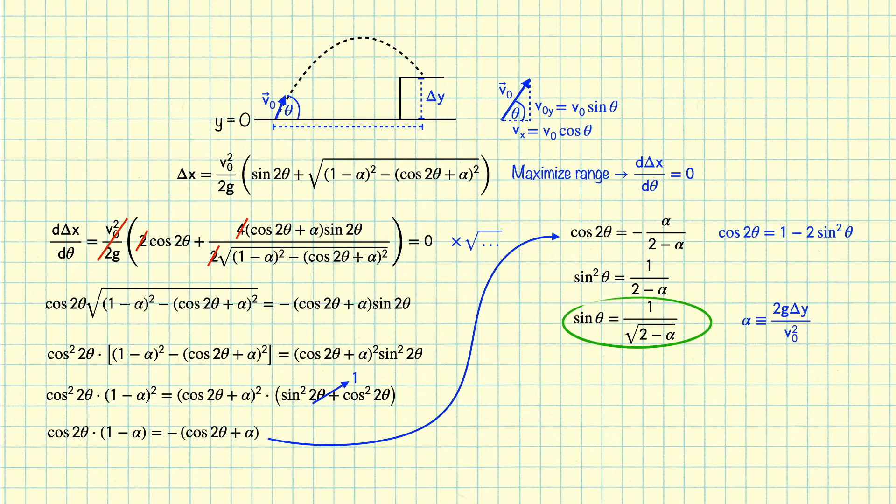In a previous video we found that if delta y equals 0, theta equals 45 degrees. And if you plug in alpha equals 0, you'll get sine theta equals 1 over square root of 2, which in fact is the sine of 45 degrees. So this checks out.